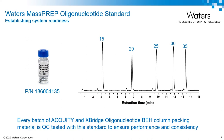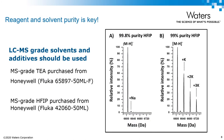Waters has a MassPREP oligonucleotide standard available that's a poly-T ladder composed of 15, 20, 25, 30, and 35 mer species, and it is the same standard that's used to QC test every batch of oligonucleotide BEH columns. Whichever mobile phase system you choose to pursue, you should always use LC-MS grade solvents and additives when available, specifically when MS analysis is required.